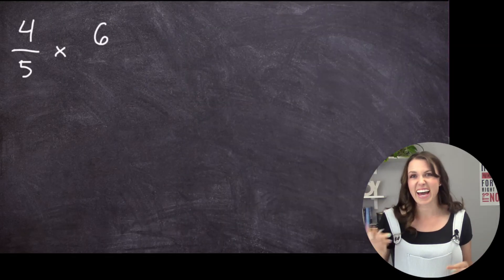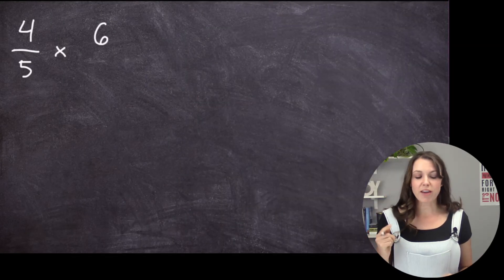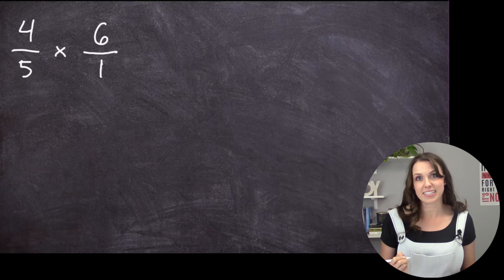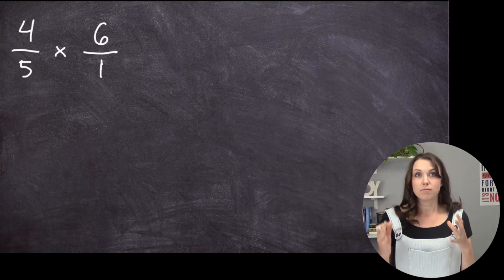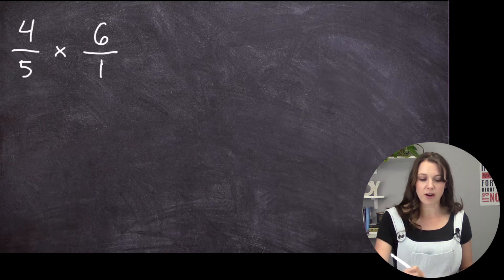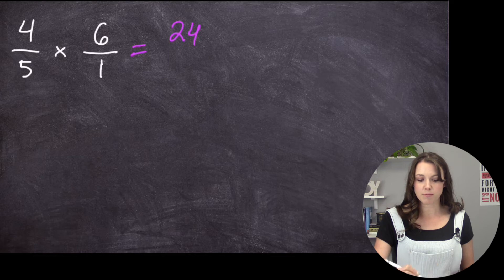Let's do another one like that just for practice. So we have 4/5 times 6. So the first thing I'm going to do is I'm going to put a 1 underneath the 6 so that I have two fractions that I can work with. So let's multiply across. So I have 4 times 6 is 24. And 5 times 1 is 5.